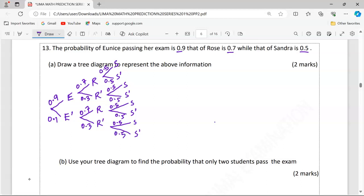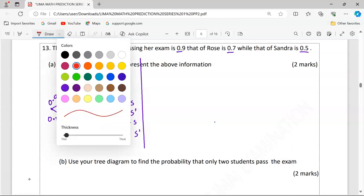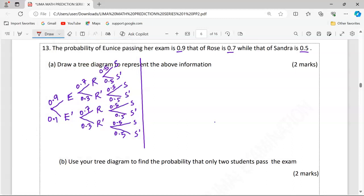So, now, these are the outcomes represented on a tree diagram. Allow me to simplify the tree diagram by having all the outcomes listed at the end of the brackets. We have Eunice, Ross, Sandra, all of them passing.